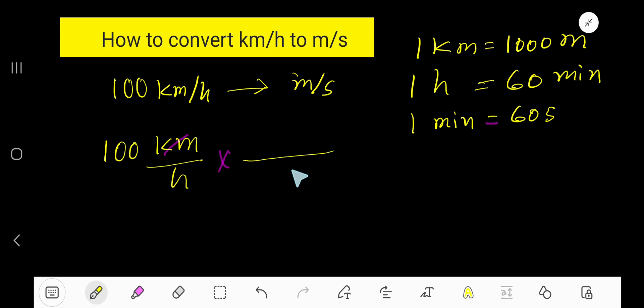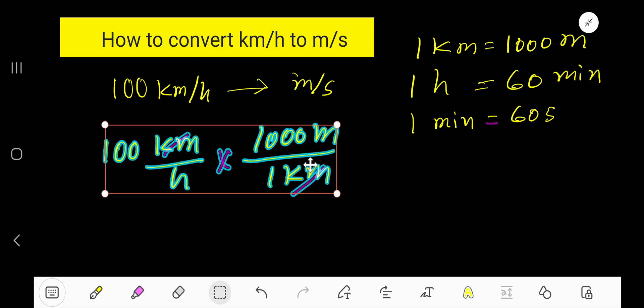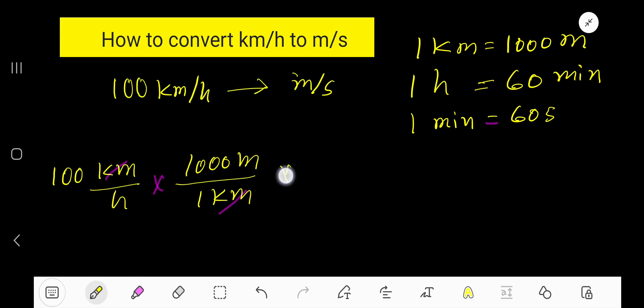To cancel kilometers, we'll use this. So this portion will come as denominator: 1 kilometer. Cancel this kilometer with this kilometer, and the related number is 1000 meters. Then we'll convert hour to minute using this. We need to cancel this hour, so hour will come at the top with 60 minutes.